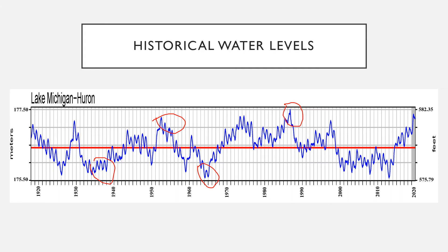When you fast forward to the end of the graph you can see that in 2013 there was a seasonal record low, and now in 2020 we're at seasonal record highs — that's in a period of only seven years. Scientists are predicting that these fluctuations will continue to occur in shorter time periods like we're seeing now.